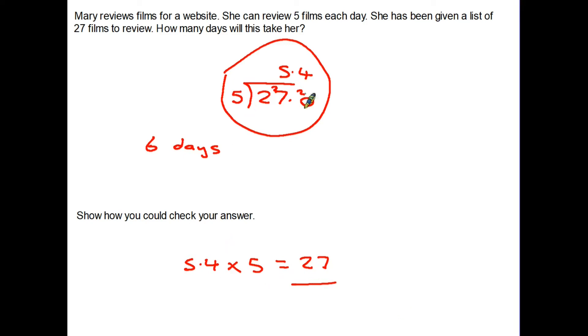So in other words we did a division, we are now going to check it by doing the opposite function, the multiplication, and we end up with 27 which is where we started in the first place. So we have successfully checked our answer.